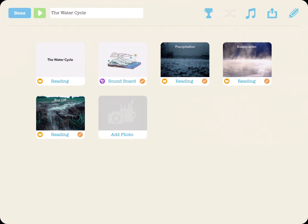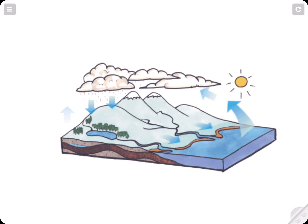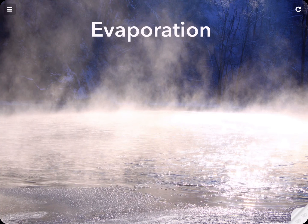Now let's play our lesson. Welcome to our lesson on the water cycle. Tap around to learn about the continuous movement of water on, above, and below the surface of Earth. Evaporation. Evaporation is the process by which water changes from a liquid to a gas or vapor.